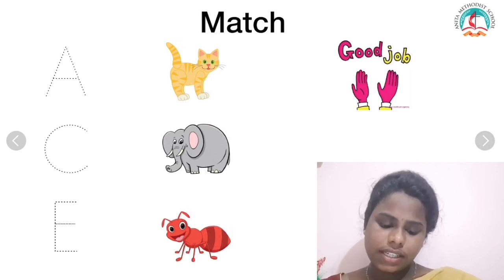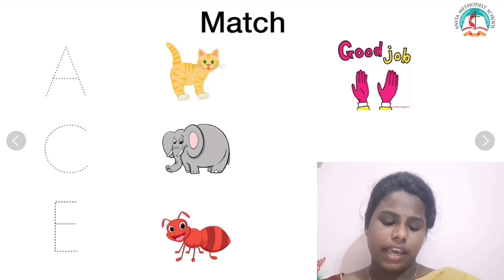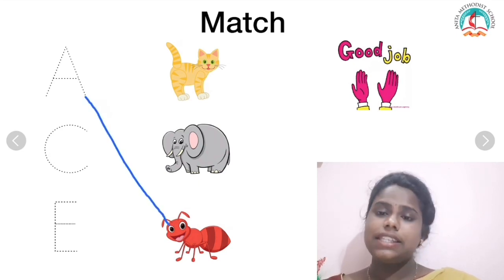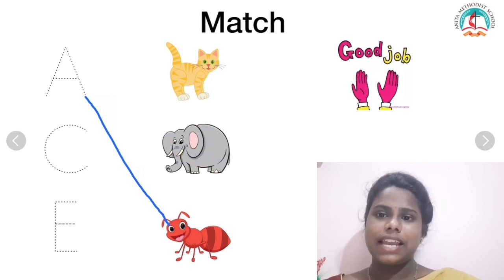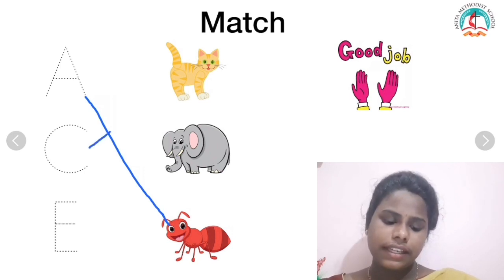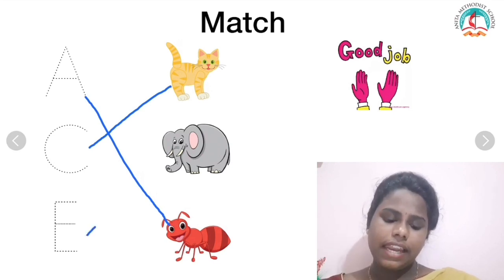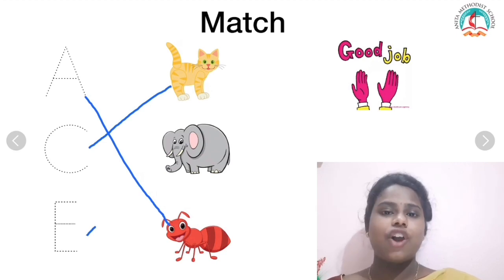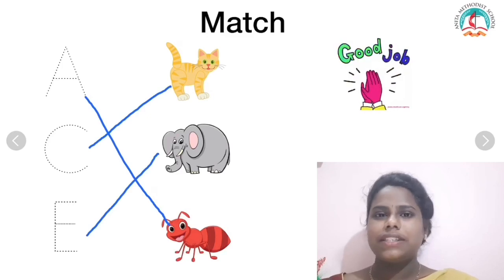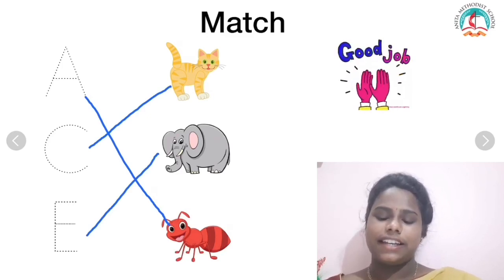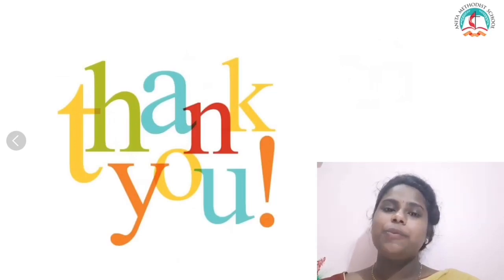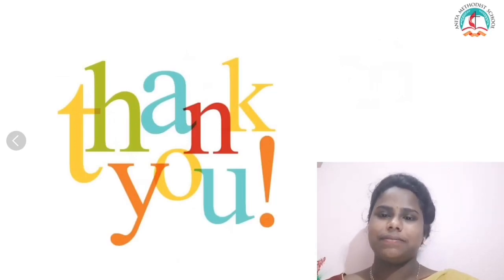5, 4, 3, 2, 1 — and here are your answers. Shall we check the answers? What is the first alphabet? It is letter A — A for ant, you will match it. What is the next letter? It is letter C — C for cat, you will match it. What is the next letter? You see letter E — E for elephant. Very good, children — those who got all the answers right, very good! Those who got a few mistakes, no problem. I hope you enjoyed today's class. Thank you, have a nice day. Thanks, bye!